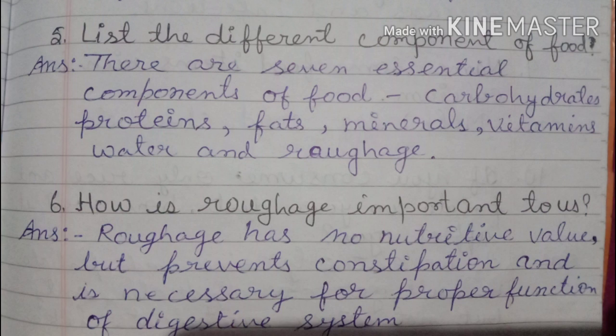Fifth question: list the different components of food. Answer: there are seven essential components of food — carbohydrates, proteins, fats, minerals, vitamins, water and roughage. Sixth question: how is roughage important to us? Answer: roughage has no nutritive value but prevents constipation and is necessary for proper functioning of our digestive system.